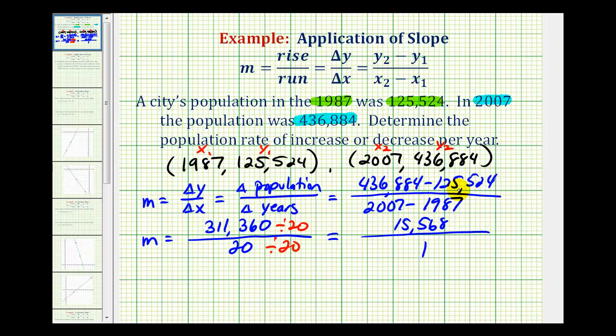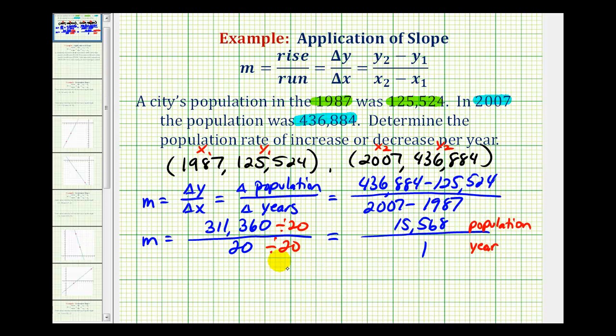Again, this is the change in population per one year. So from this, we can conclude that from 1987 to 2007, the average rate of increase is 15,568 people per year.